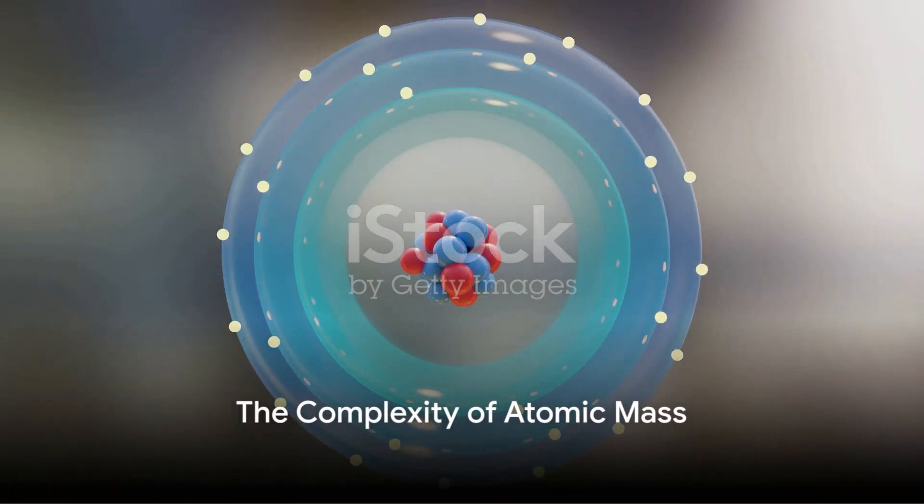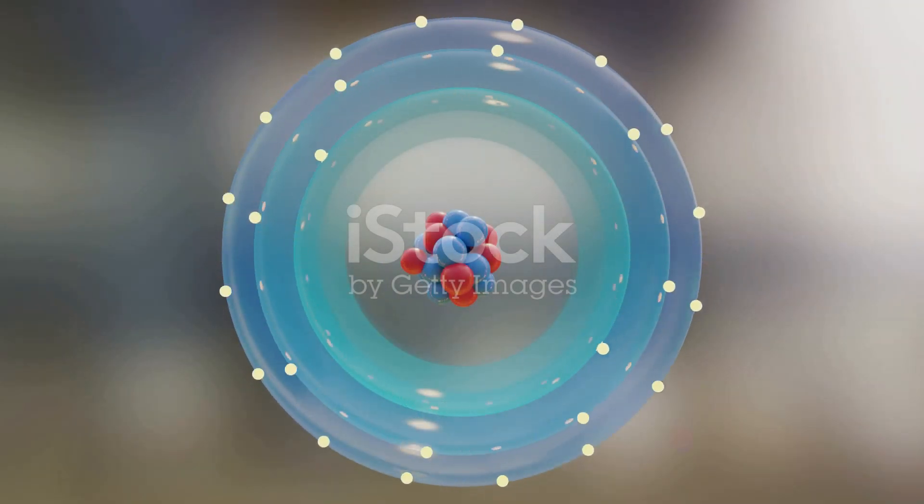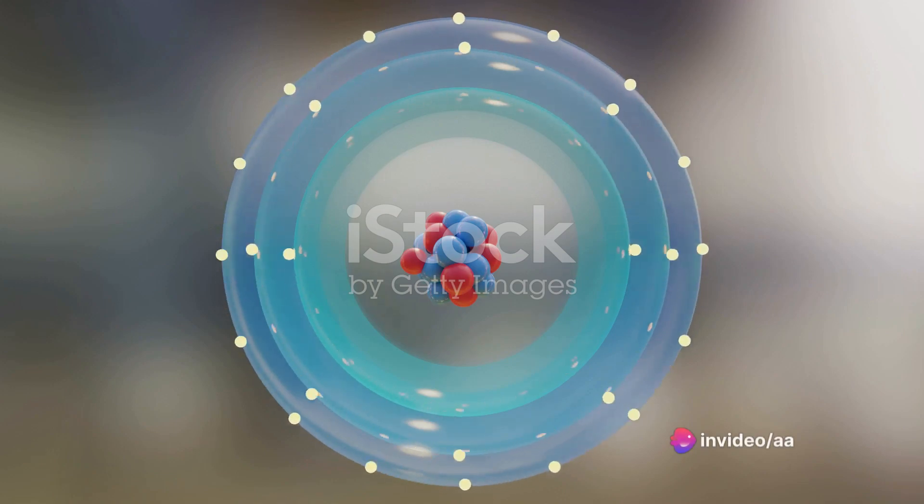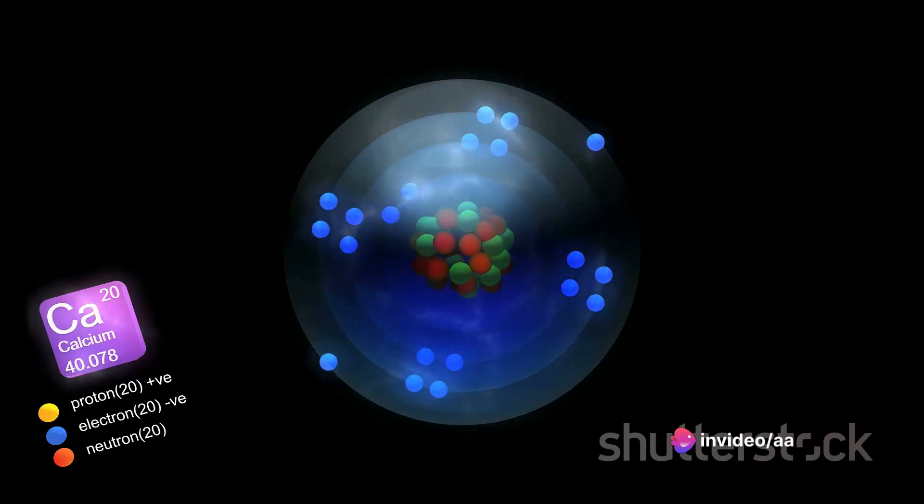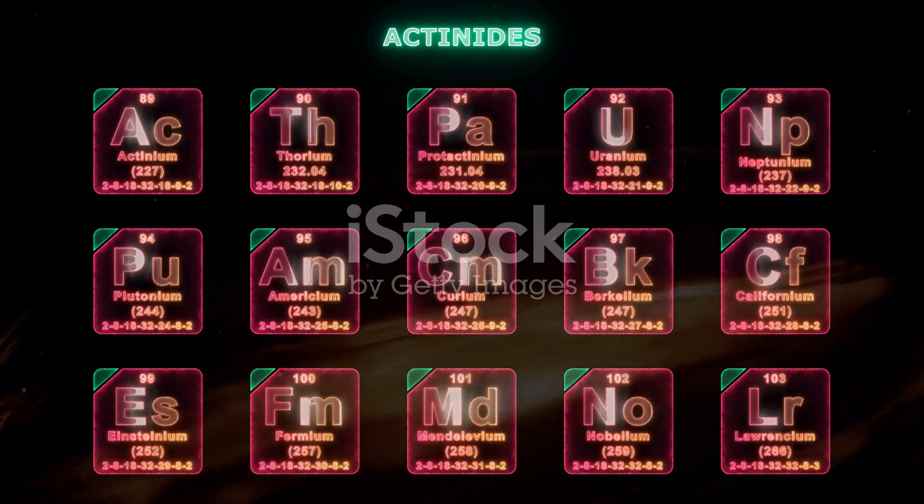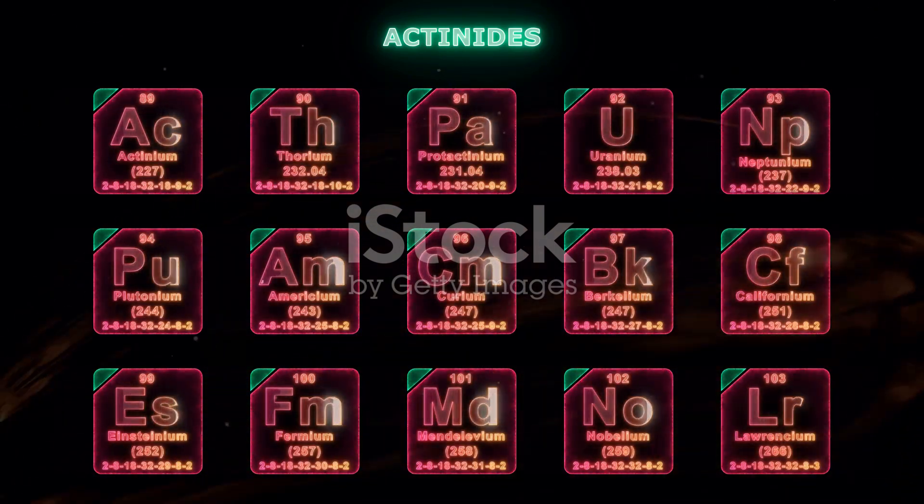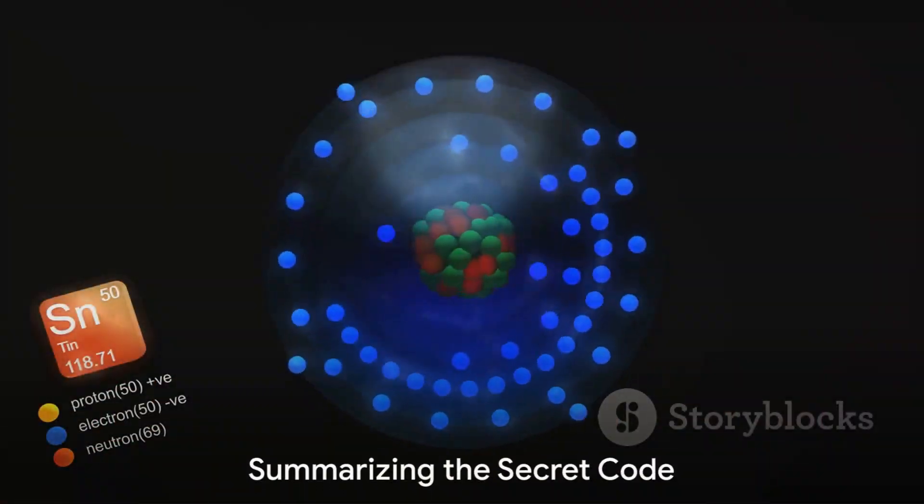Also, it's important to remember that while the atomic number of an element is always a whole number, the atomic mass often isn't. This is because the atomic mass is an average. It takes into account the weights of all the different isotopes of an element, which can have varying numbers of neutrons.